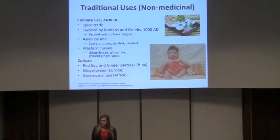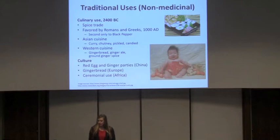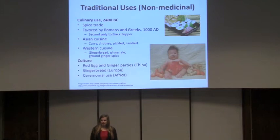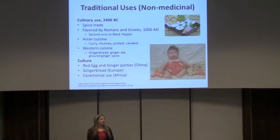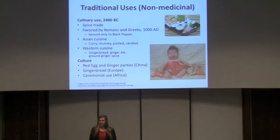Non-medicinal uses of ginger extend back over 4,000 years, mostly in China and India. In India it was used more for medicine, but it was also extensively traded as a spice — highly valued by Romans and Greeks. It remains present in Asian and Indian cuisine in curries and chutneys, and spread into Western cuisine in forms like gingerbread, ginger ale, ginger beer, and candied ginger. Culturally, red egg and ginger parties in China are a tradition welcoming newborn babies — still continued and modernized in America — where ginger is offered as a gift by grandparents.